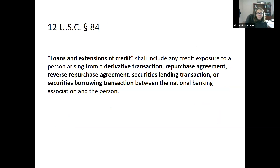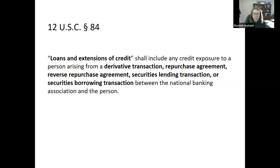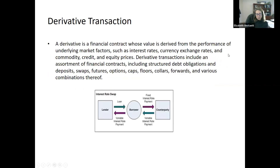Loans or extensions of credit is broadly defined and has been expanded under the Dodd-Frank Act to include not only what we would traditionally think of as loans and extensions of credit, but also other types of contractual arrangements that were very popular — such as derivative transactions and other contractual arrangements which really obligate the bank. Prior to Dodd-Frank, banking law was very much based on traditional assets and liabilities, but during the financial crisis many problems arose from these contractual arrangements rather than traditional ones.